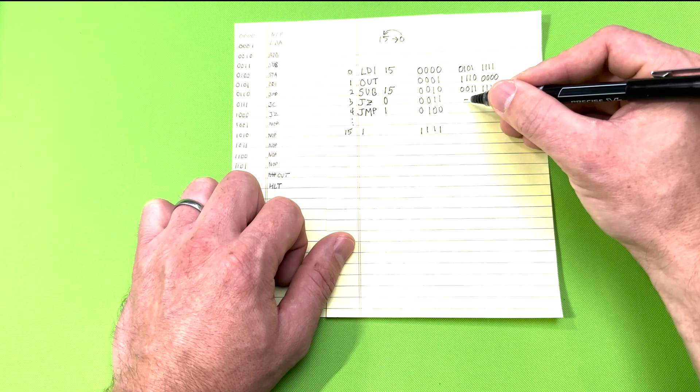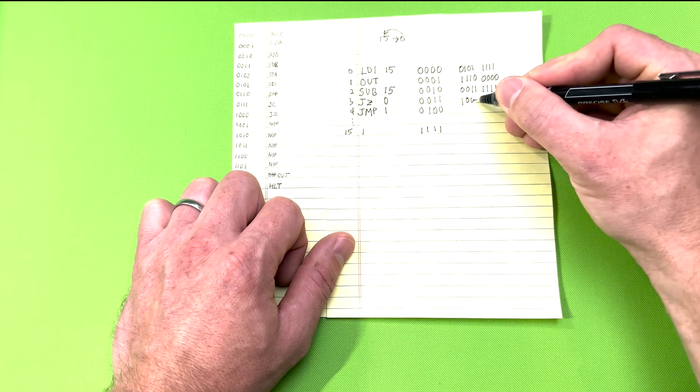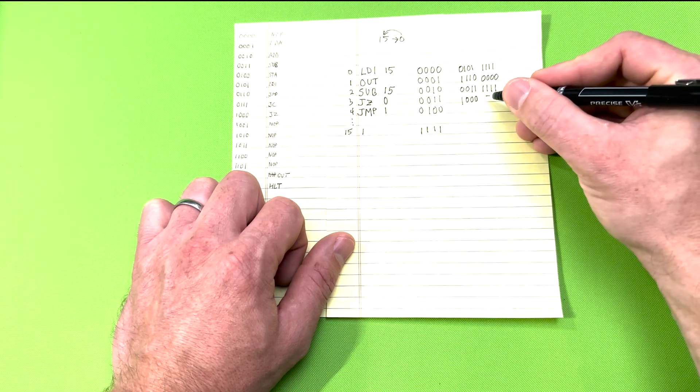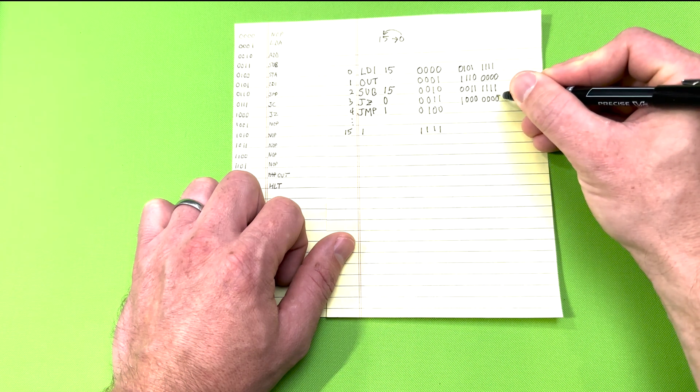The JZ instruction is 1, 0, 0, 0 and the data part is the RAM location where it will jump which is zero.